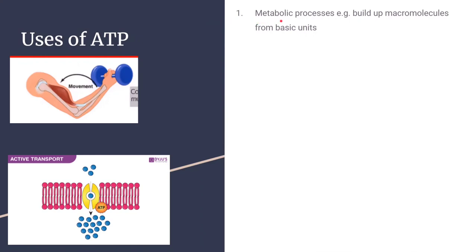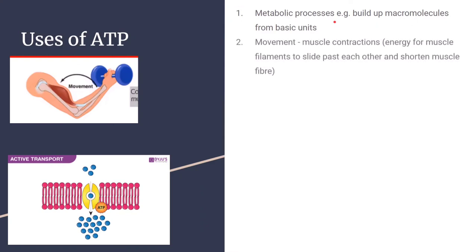ATP is used in metabolic processes — building up macromolecules from basic units, for example making starch out of glucose molecules. ATP is also used in movement: muscle contractions require energy when muscle filaments slide past each other, shortening the muscle fibre and allowing our muscles to contract.